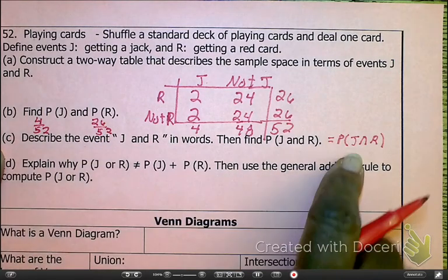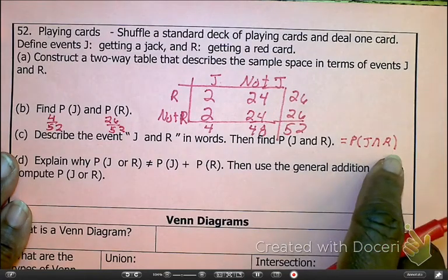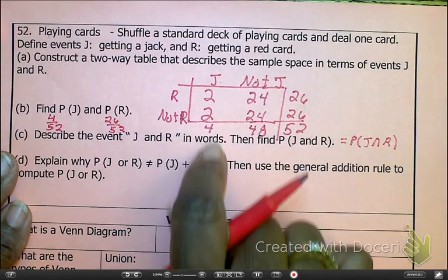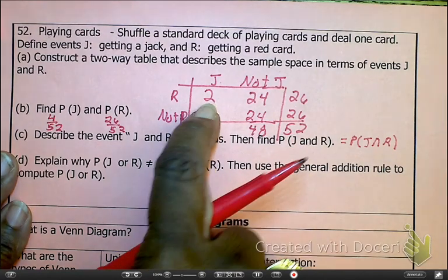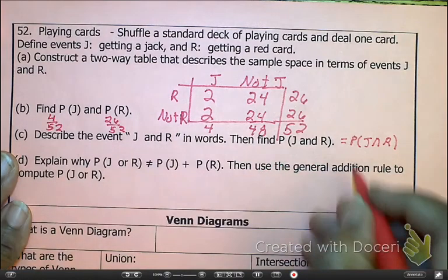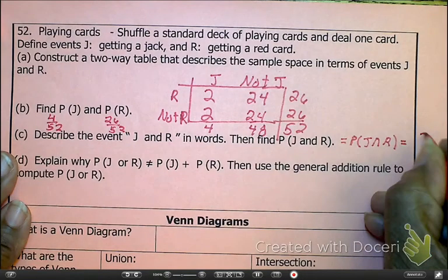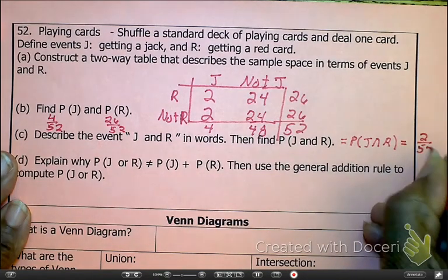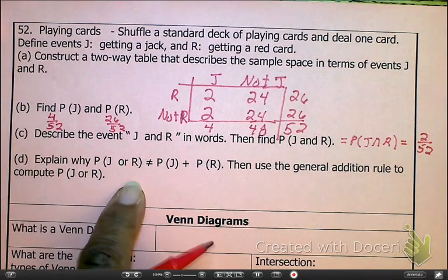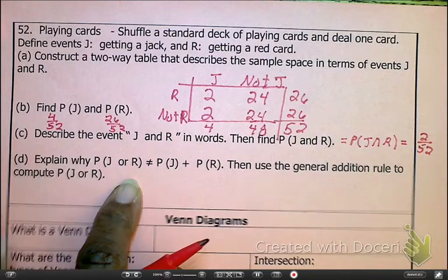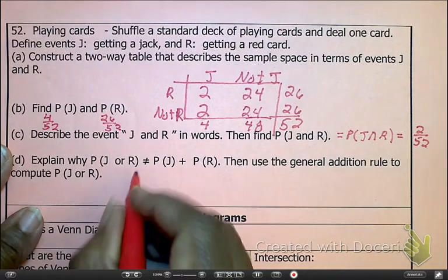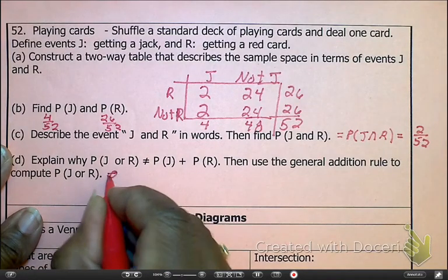If there are two Jacks that are red, that means that there's 24 red cards that are not Jacks. If there are two that are not red, that means that there are 24 that are neither red nor Jacks. And then, as we add up the margins, go ahead and get your total. And please notice the grand total is 52, as it should be. Okay, so our next question is, the probability of Jacks. Then, we want the probability of reds, have it separate.